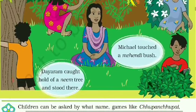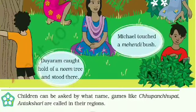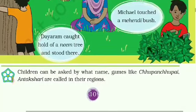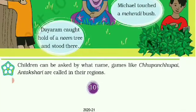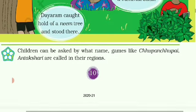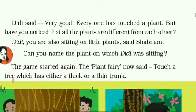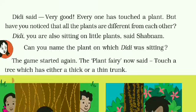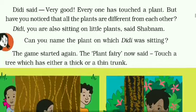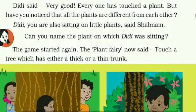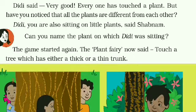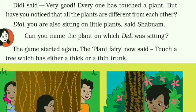Ammu held the marigold plant. Sabnam touched a jasmine plant. Michael touched a mehendi bush. Dayaram caught hold of a neem tree and stood there. Children can be asked by what name games like chupam chupai and antakshri are called in their regions. Batcho se puchha ja sakta hai ki chupam chupai antakshri ko unke chhetr mein kya kehte hain. Didi said, 'Very good, everyone has touched a plant.' Lekin kya tumne notice kiya ki sabhi plants ek dusre se alag hain? Didi, aap jinn par baithe ho, wahan bhi ek chote prakaar ke plants hain.